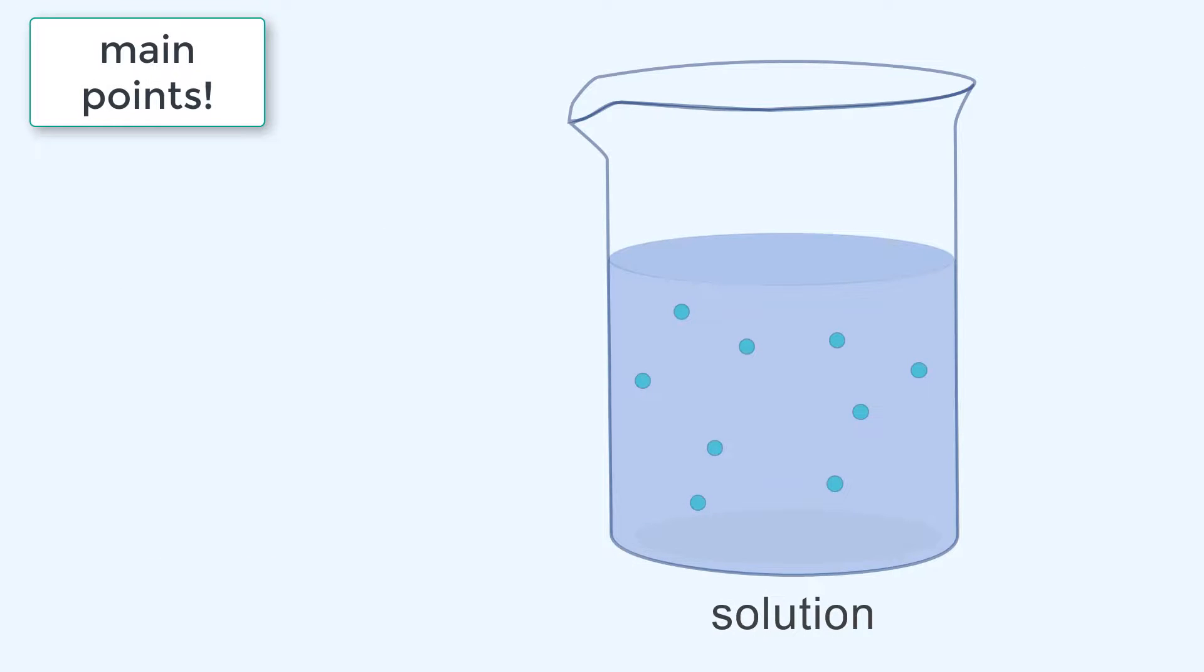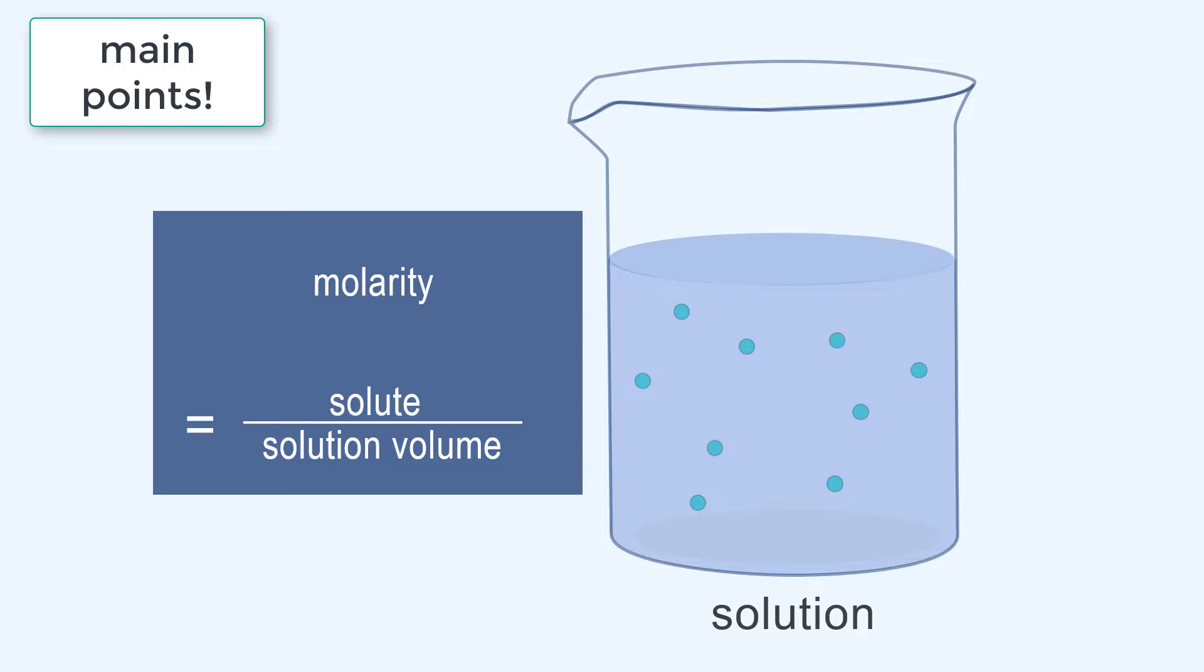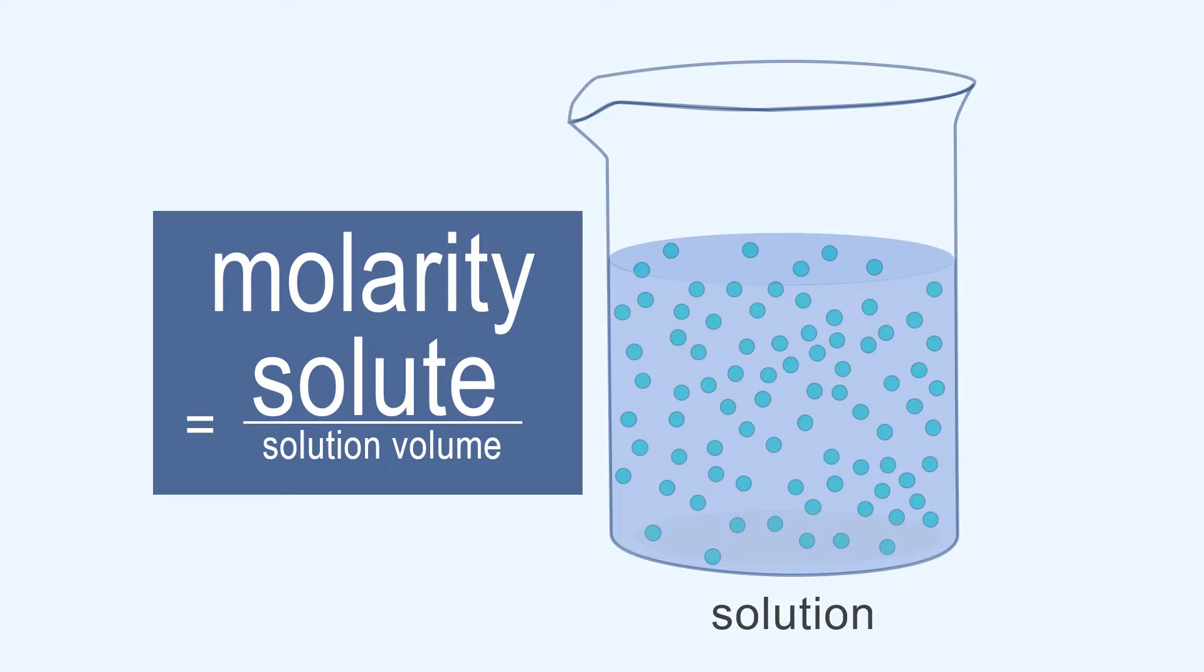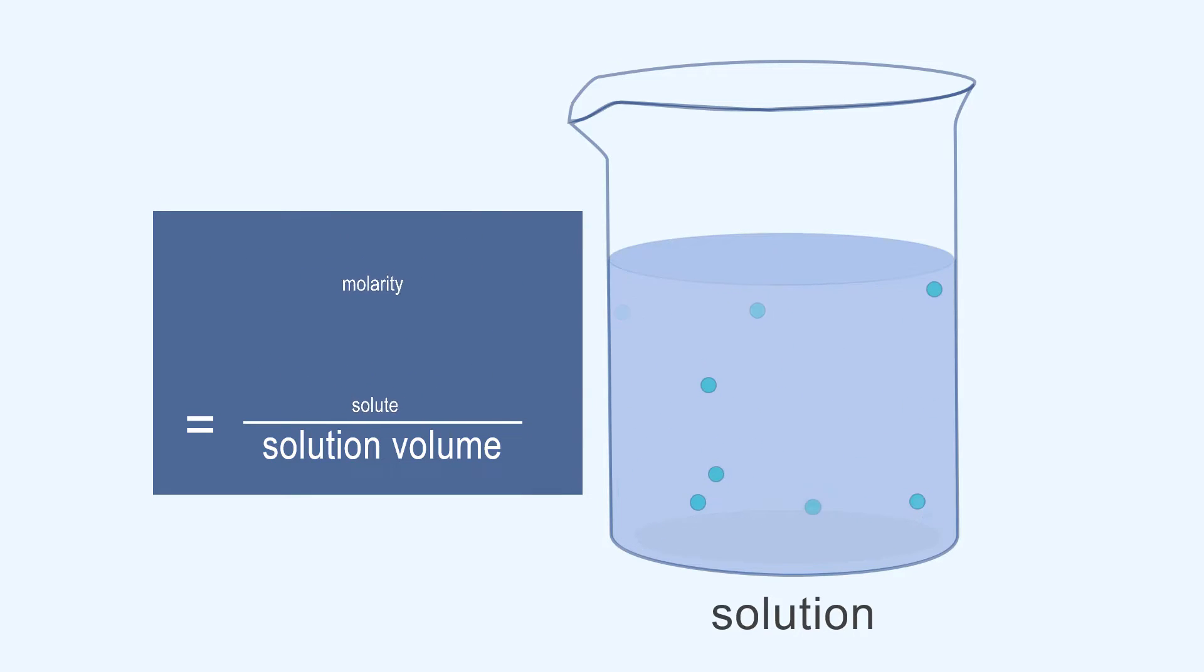Main points: A solution is a mixture of solute and solvent. Molarity is the ratio of solvent to solution volume. So adding more solute increases the molarity. If you remove the solute, you will be left with solvent.